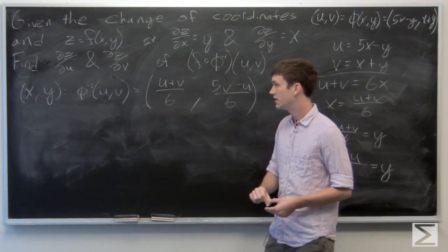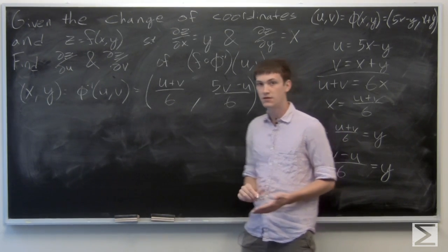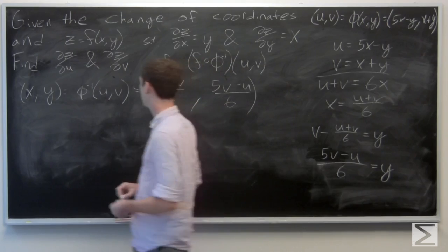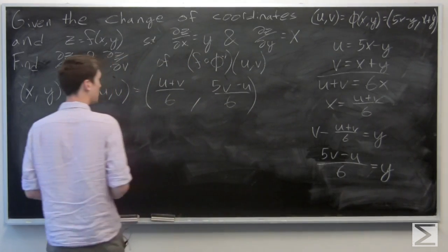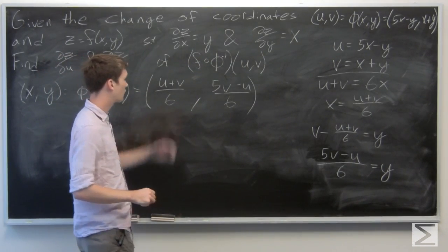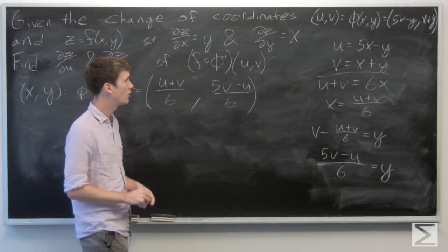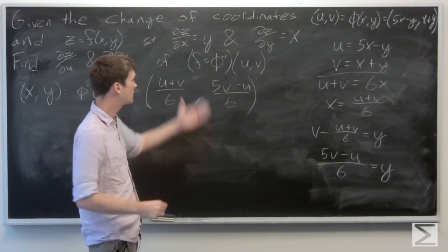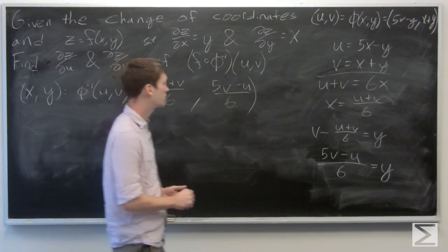And the second component is (5v minus u) over 6. So we see that phi is a bijection — it's infinitely differentiable, so it's a smooth change of coordinates as stated.